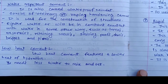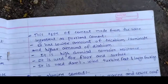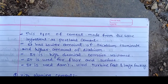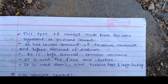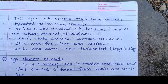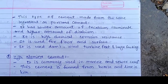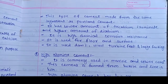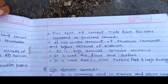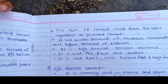Low heat cement features a lower heat of hydration and needs less water to mix and set. It is made from the same ingredients as Portland cement but has a lower amount of tricalcium aluminate and a higher amount of dicalcium silicate. It has high chemical corrosion resistance and is used for dams, wind turbine footings, and large footings.